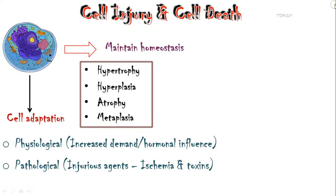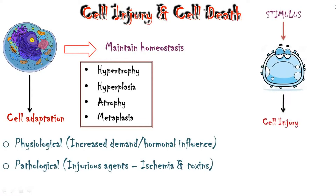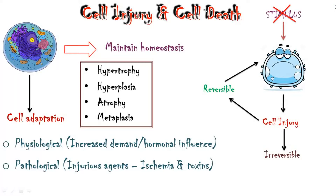If the cells cannot adapt according to the changes in their microenvironment, they undergo cell injury. Cell injury could be reversible or irreversible. In reversible injury, if the injurious stimulus is removed, the cell can be brought back to its normal state. However, in irreversible injury, the cell cannot be brought back to normal, even if the injurious stimulus is removed.